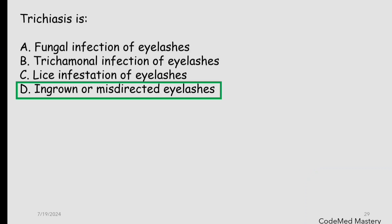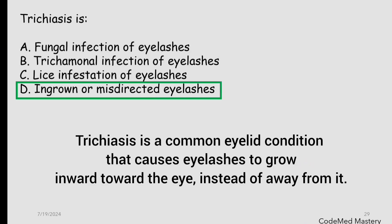Next question: trichiasis is — and the right answer is option D: ingrown or misdirected eyelashes. Trichiasis is an eye condition in which your eyelashes grow the wrong way — that is, towards your eye rather than away from it.